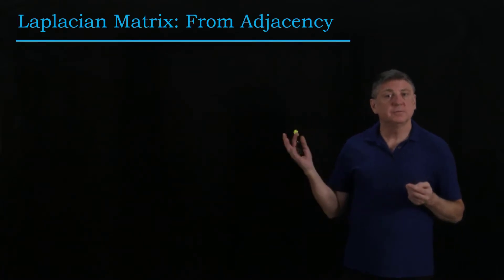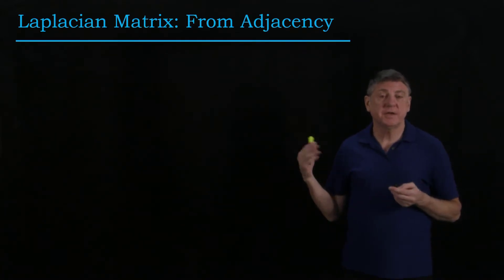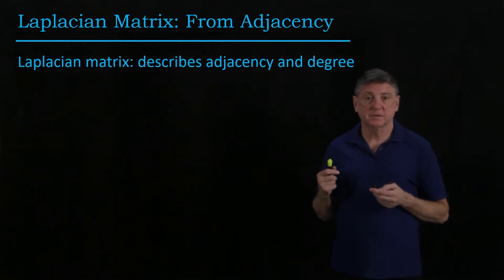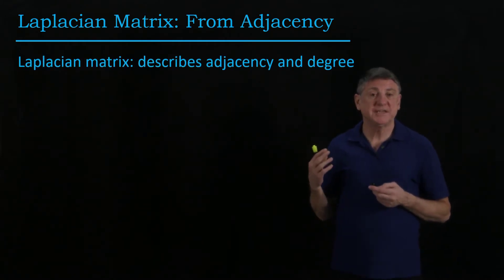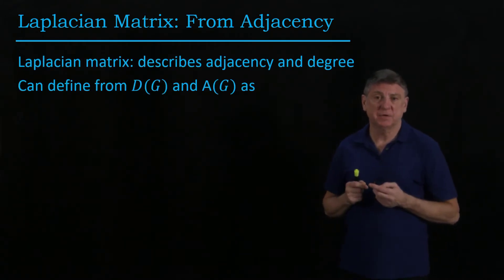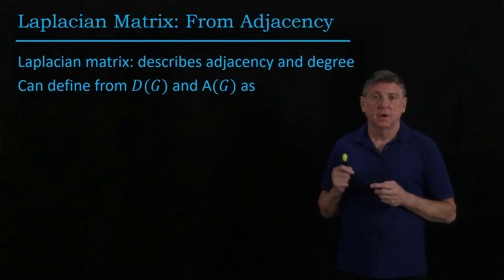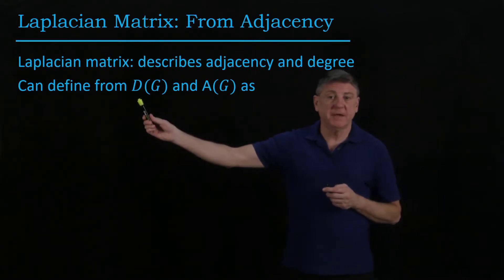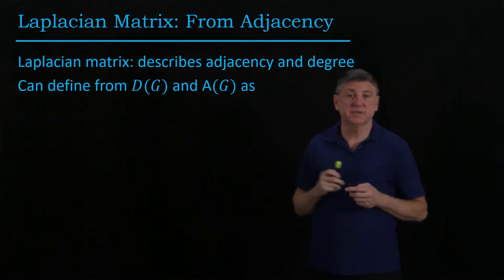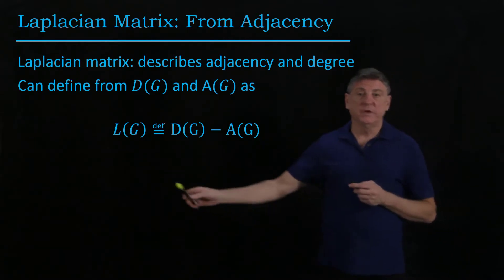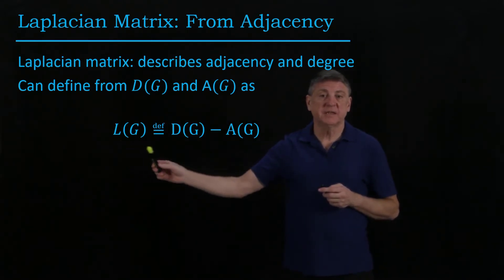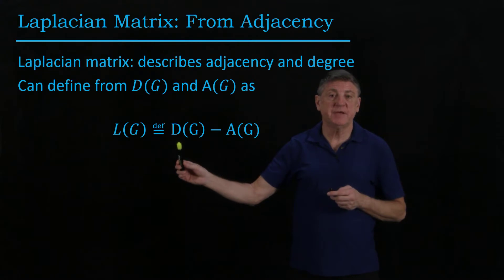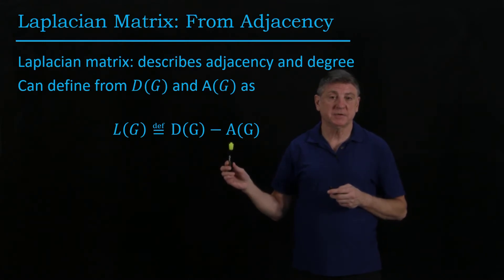Welcome. In this session we'll explore the Laplacian matrix of a graph. This matrix comes from the adjacency matrix and from the degree matrix. It describes both the adjacency and the degree at the same time. We can define it in this simple way: the Laplacian matrix is defined as the degree matrix minus the adjacency matrix.